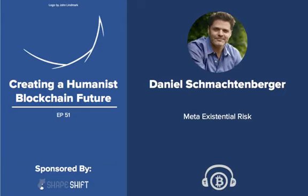Going one level deeper: we talked about rivalrous dynamics multiplied by exponential tech, which self-terminates; we also talked about linear, open-loop flows on a finite planet, which also leads to collapse. There is something that unifies both of those — we can call it a meta-meta x-risk.